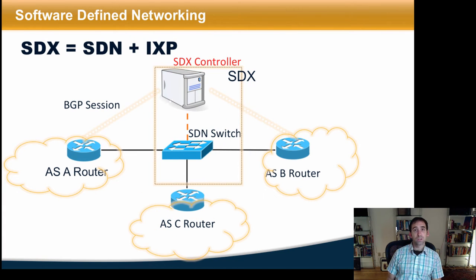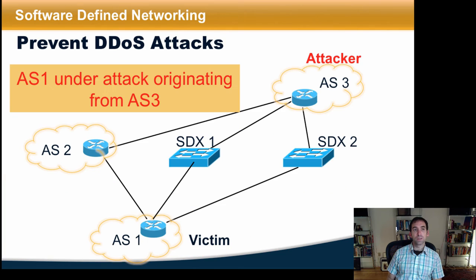The basic idea behind a software-defined internet exchange point, or SDX, is to turn that route server into a smart SDN controller and make the layer 2 switch an SDN-capable switch that can take commands from the SDN controller concerning the forwarding table entries it should install for each participant. This seemingly simple change enables a wide variety of new applications. One is the ability to prevent denial of service attacks upstream. For example, if AS1 is receiving attack traffic from an upstream AS, AS3, the victim AS can install drop rules potentially at multiple SDN-enabled exchange points, thus squelching this traffic much closer to the source.